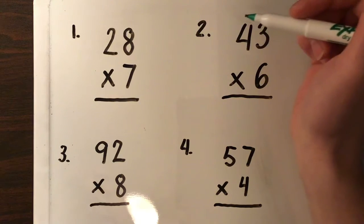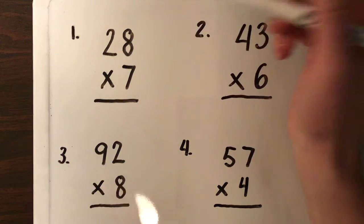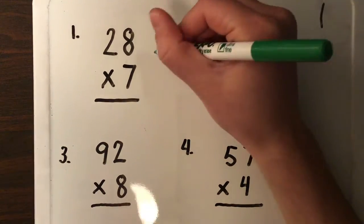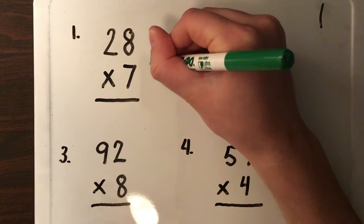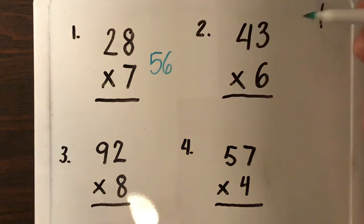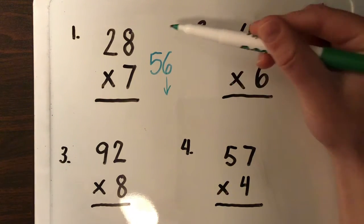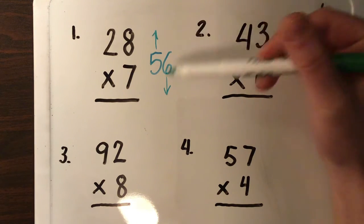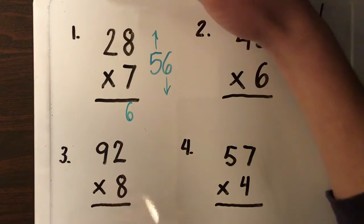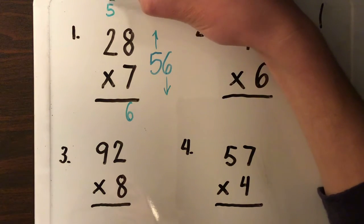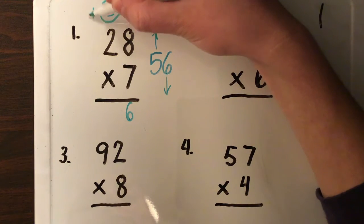So I have seven times eight. Seven times eight is 56. I'm going to write that number here. Now what I do with that number is I put the ones place down and the tens place up. The six goes down here and then the five comes up here. I circle and I plus it.